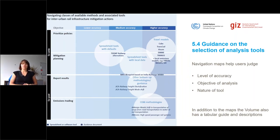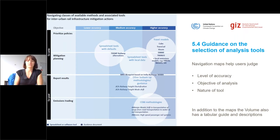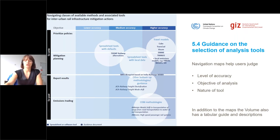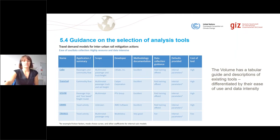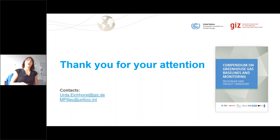In the guidance part, we always include a navigation map to help users judge the level of accuracy of existing methodologies and, based on the objective of the analysis, quickly identify which methodologies might be suitable for their particular purpose. In addition to that, the guide includes tabular descriptions of all existing methodologies for that particular mitigation action type, linked so that you can find detailed information for each of the tools. That is basically how the transport volume is organized for all of the mitigation action types.